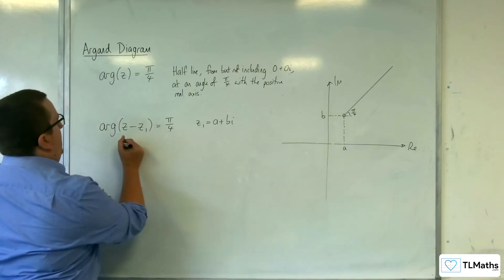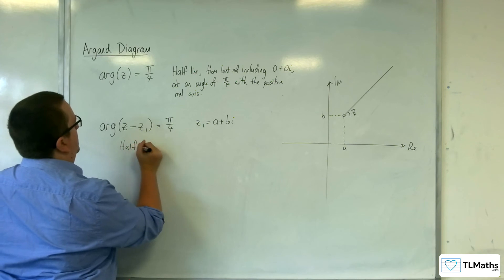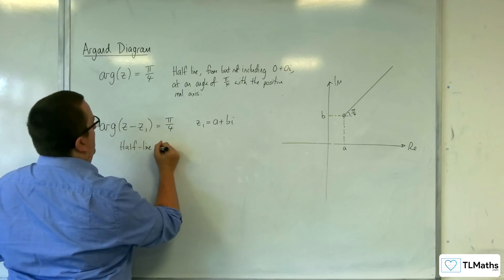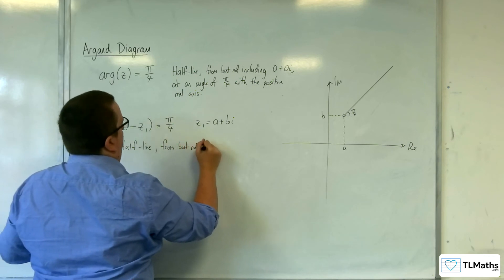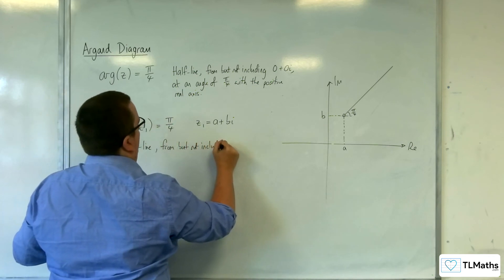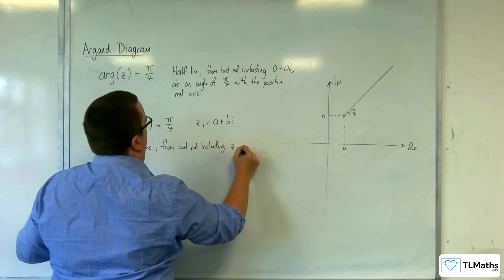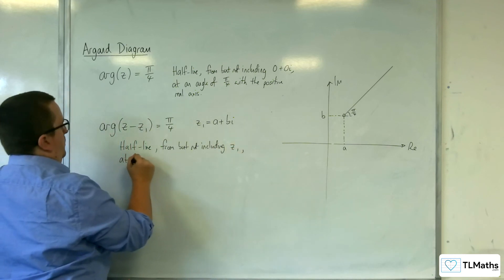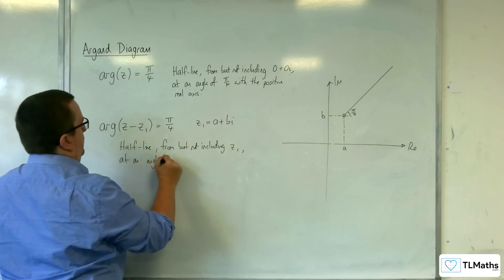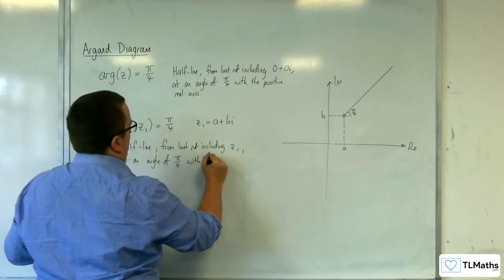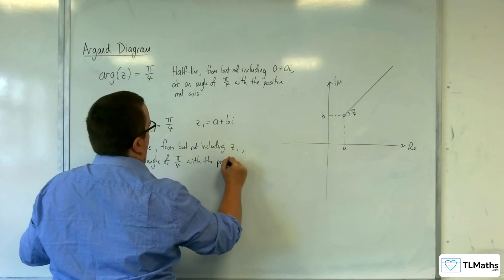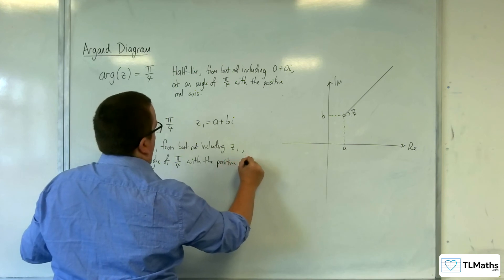So this is a half line from, but not including, z1 at an angle of pi over 4 with the positive real axis.